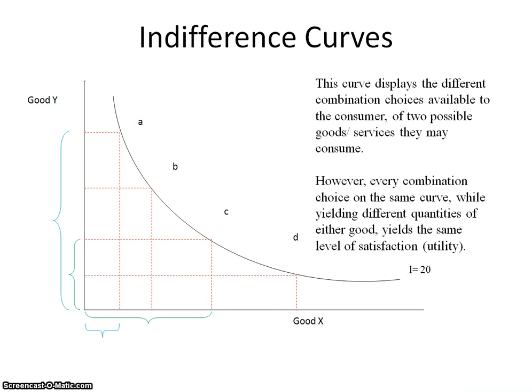As a consumer, you have choices. In this case, we are simply going to compare the choices between two goods, good Y and good X. As an individual, you would have multiple options, multiple combination choices between good Y and good X in terms of how much of good Y you would desire and how much of good X you would desire.